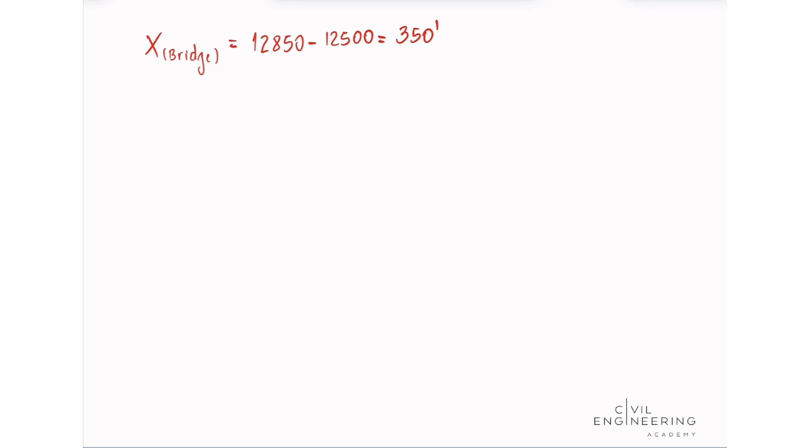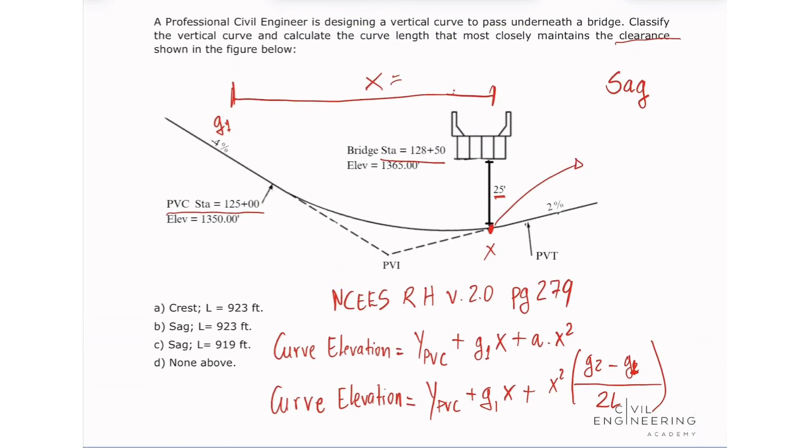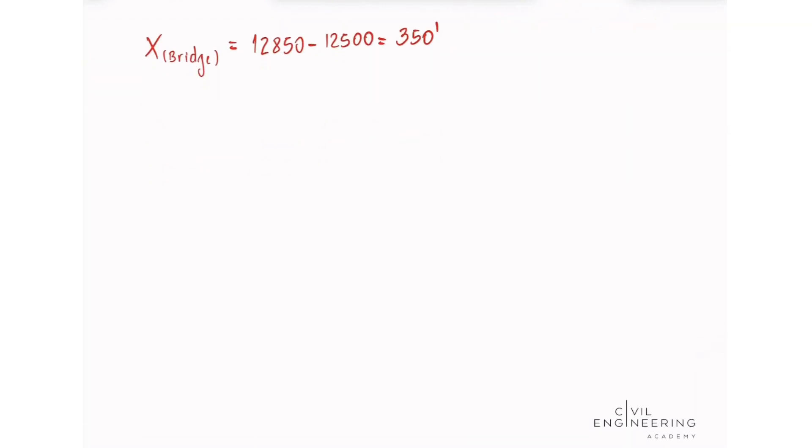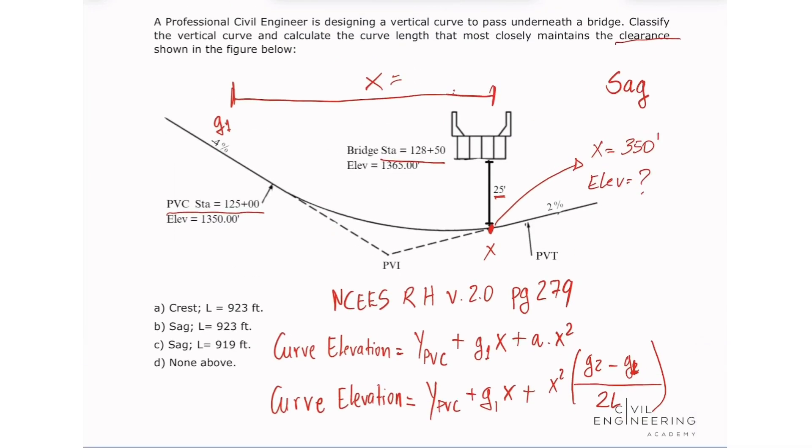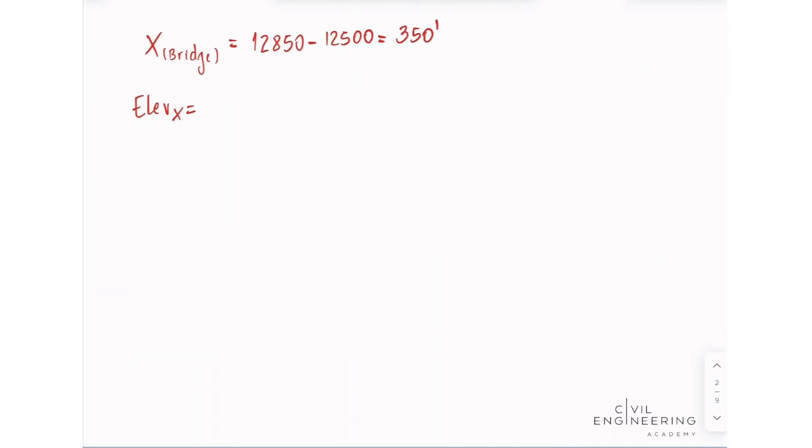And now I can calculate what is the curve elevation at this point. We already found that the distance X equals 350. And we need to know what is the elevation at this point. So we know that the elevation at X will be our elevation at the bridge, which is 1,365 minus 25. So we have 1,365 minus 25, I'll get an elevation of 1,340 feet.